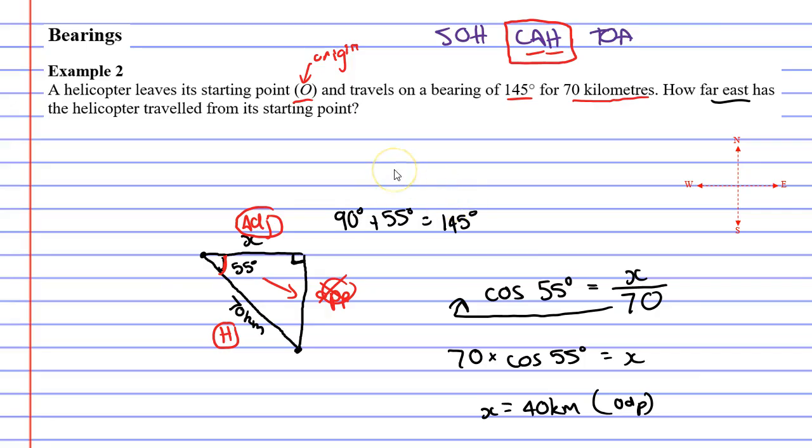Now because this question was a written question it would be nice to give a written solution. So we could just say that the helicopter has traveled 40 kilometers east of its starting point. Anyway that concludes our video on example 2. Remember to read the description below for links to work booklets that relate to this video.